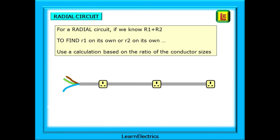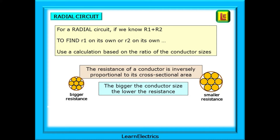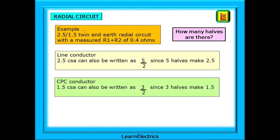For a radial circuit, if we know the resistance value of r1 plus r2 and want to find r1 or r2 on its own, we must use a calculation based on the ratio of the conductor sizes. We must understand that the resistance of a conductor is inversely proportional to its cross-sectional area. In other words, the bigger the conductor size, the lower the resistance, since there is more copper to carry the current. And if the conductor size decreases, the resistance value will increase. Let's work out an example.